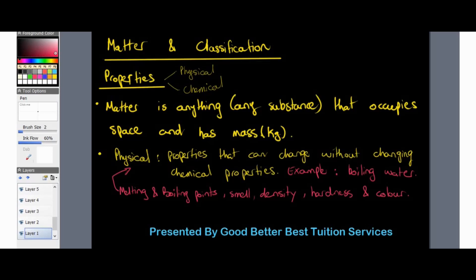Physical properties of matter are those properties that can change without changing the chemical properties. For example, if we have water — a liquid — and we boil it, we change liquid into water vapor. However, water still remains H₂O no matter what state it is in: solid (ice), liquid, or vapor. So physical properties can include melting points, boiling points, smell, density, hardness, and color, but they do not change the chemical properties of matter.